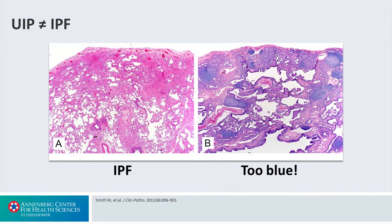What's also important to recognize is the term simply means the most common type of scar — it does not mean IPF. For it to be IPF, it has to be without an etiology. You can certainly have this pathology with an etiology. We have two examples here: the UIP pattern in panel A versus a far more blue pattern in panel B, which represents a greater increase in cellular inflammation. It's far too blue to be IPF.